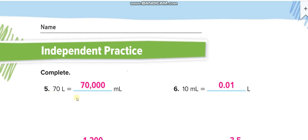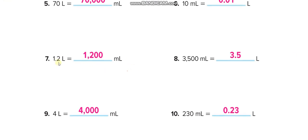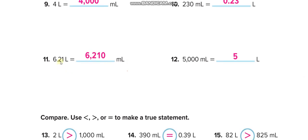More examples: 70 liters × 1,000 = 70,000 milliliters. For 10 milliliters ÷ 1,000, move the decimal three places left, placing zeros as needed: 0.01 liters. Converting from liters to milliliters, move the decimal three places right: 1.2 liters becomes 1,200 milliliters. For 3.5 liters = ? milliliters, move three places right: 3,500. For 4,000 milliliters ÷ 1,000 = 4 liters. For 0.23 milliliters, move decimal three times left: 0.230. For 0.621 liters × 1,000 = 621 milliliters. Five thousand milliliters = 5 liters.